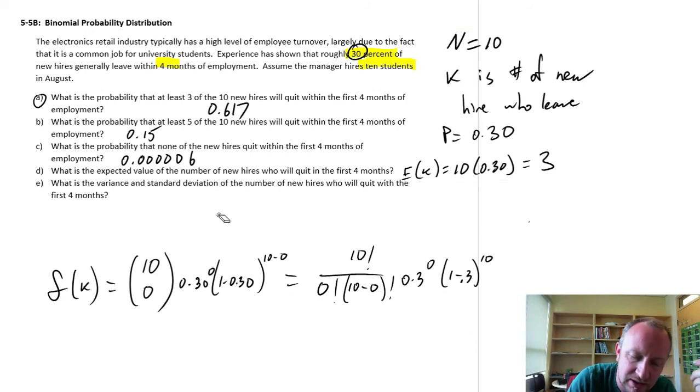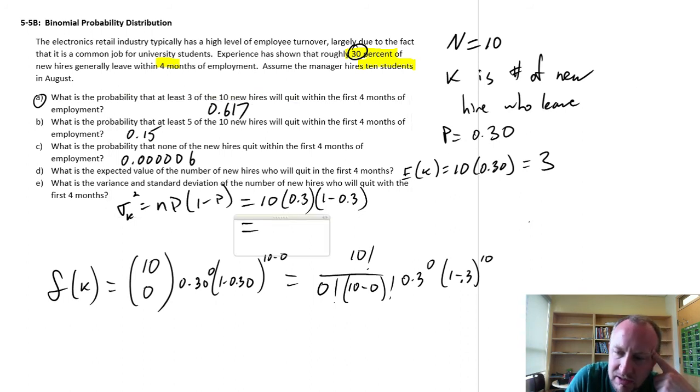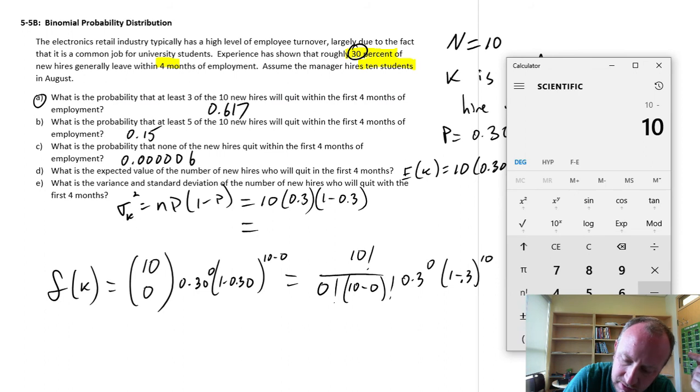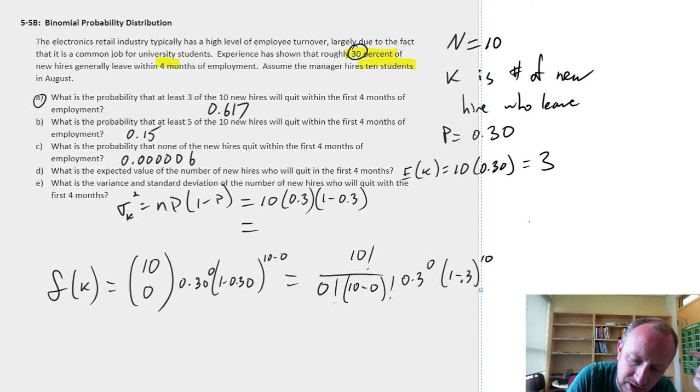Now, the variance and standard deviation. So, the variance is equal to our number of trials times the probability of success times the probability of failure. And so, here I have 10 trials. Probability of success is 0.3. Probability of failure, 1 minus 0.3. And so, that is going to be equal to 10 times 0.3 times 0.7. 2.1.